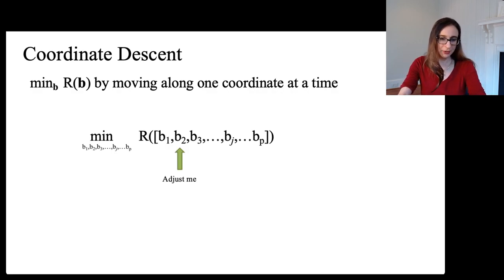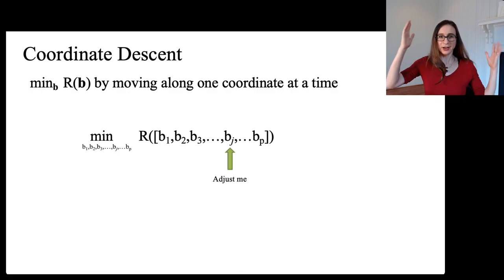In other words, let's say you pick b2. Then you change b2 to minimize R given that everything else is fixed. Then you update bj. I pick bj, I minimize R with respect to bj, leaving everything else fixed.